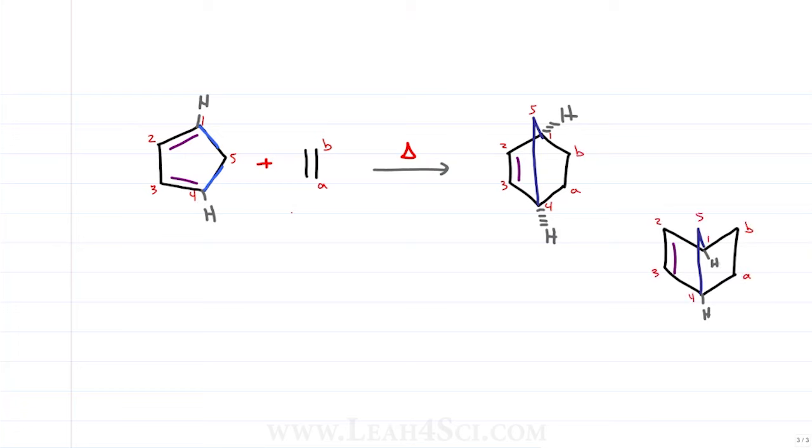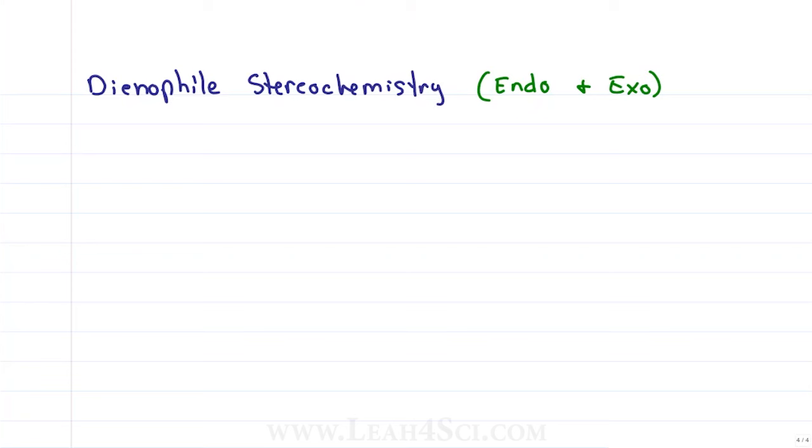Now let's take a look at the dienophile stereochemistry, specifically endo and exo. Starting with a simple molecule that has an aldehyde substituent to give me the following product. If I draw cyclohexene, I have an option of putting the aldehyde group coming up and out of the page or going down and into the page. The convention for this comes from having ring substituents, but we'll simplify it here to say that if it's coming up and out of the page, this is the exo substituent.